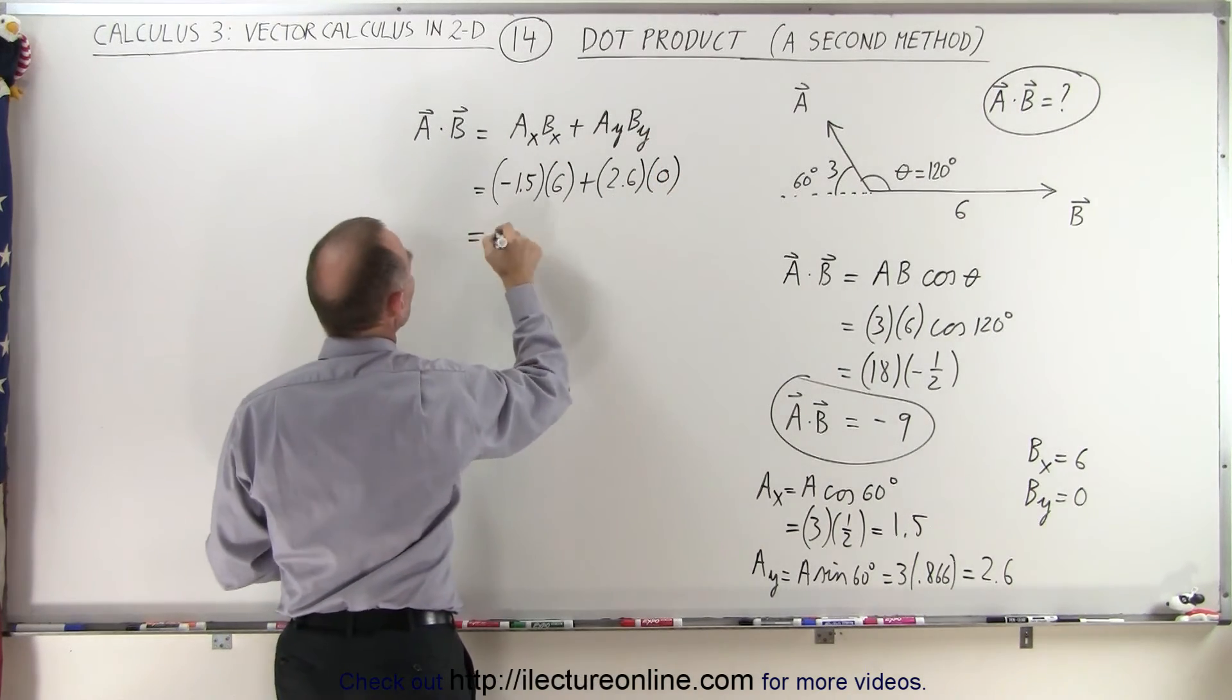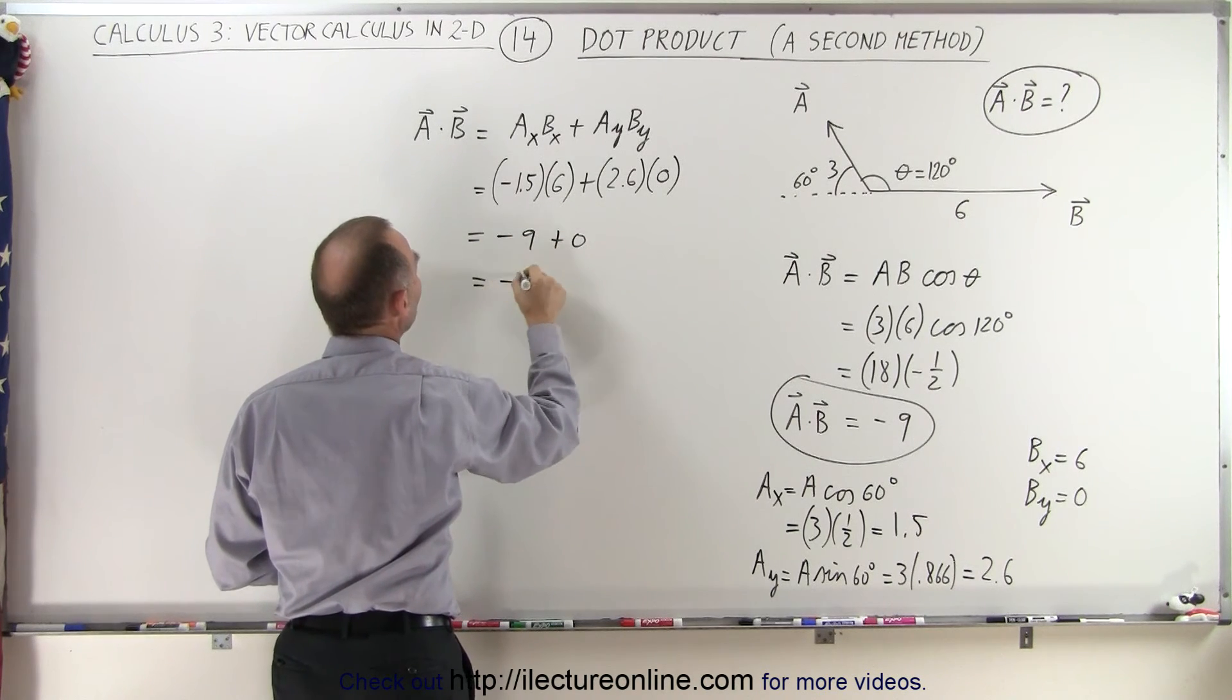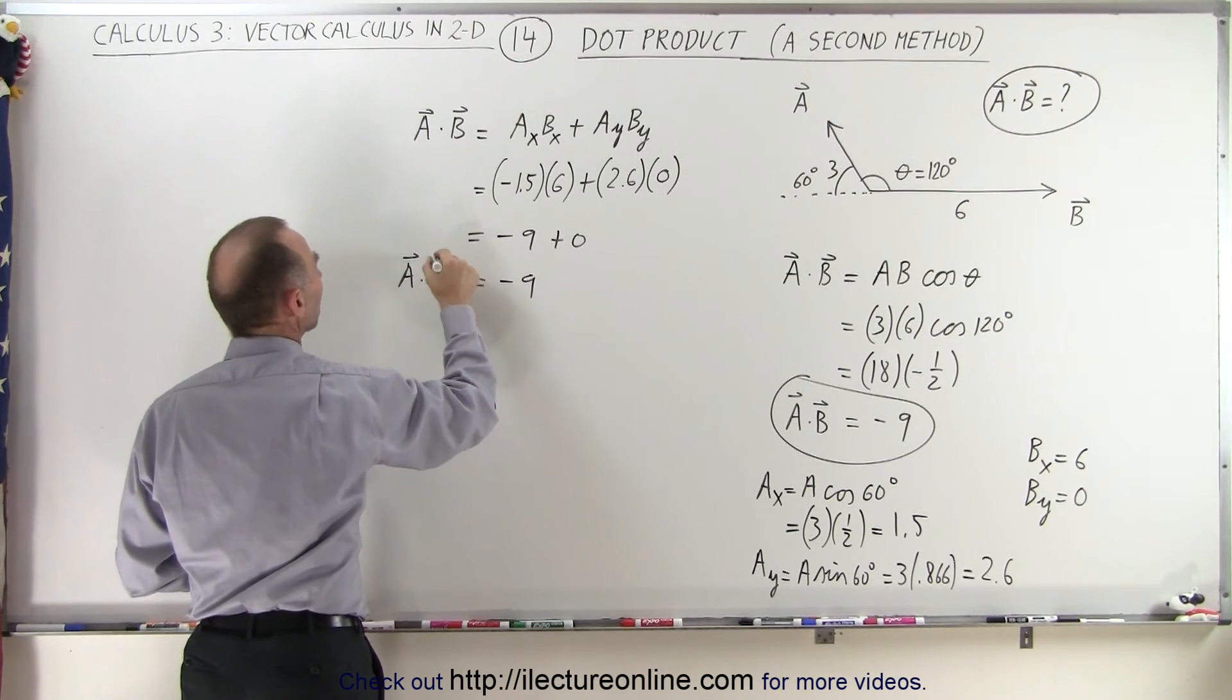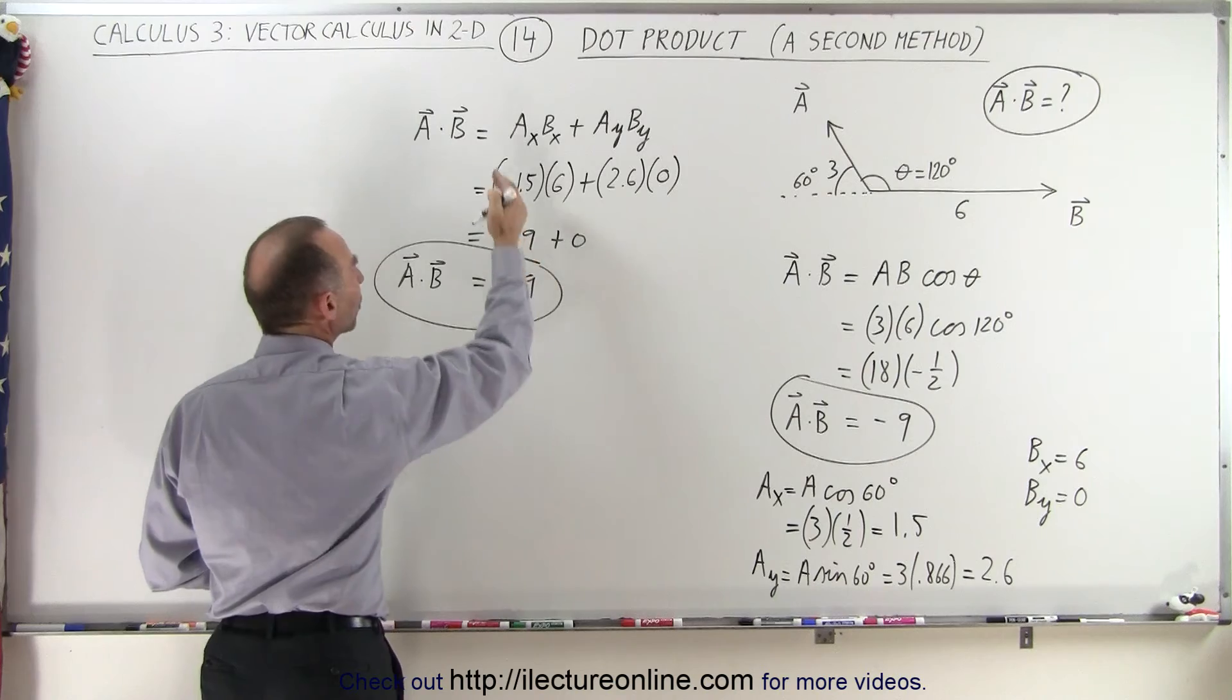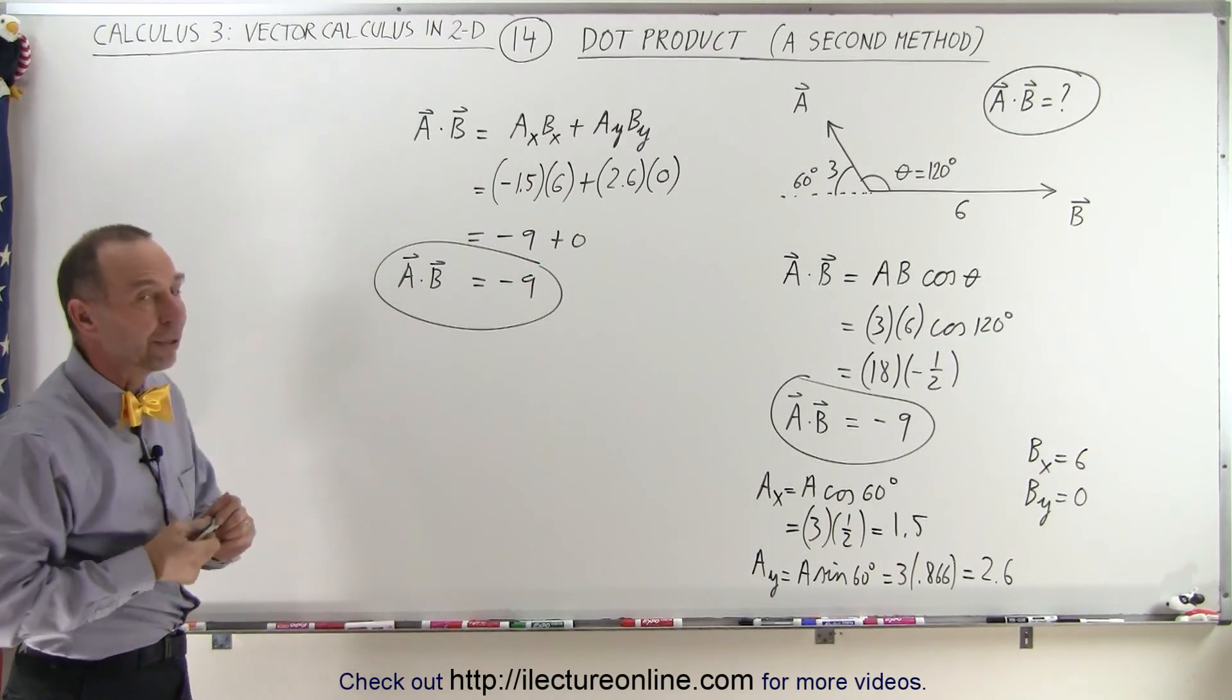So in this case, that would be minus 1.5 times 6, which is minus 9, plus 0, or minus 9. So you can see that using the second method, simply multiplying the X components together, the Y components and the Z components, we get the same value.